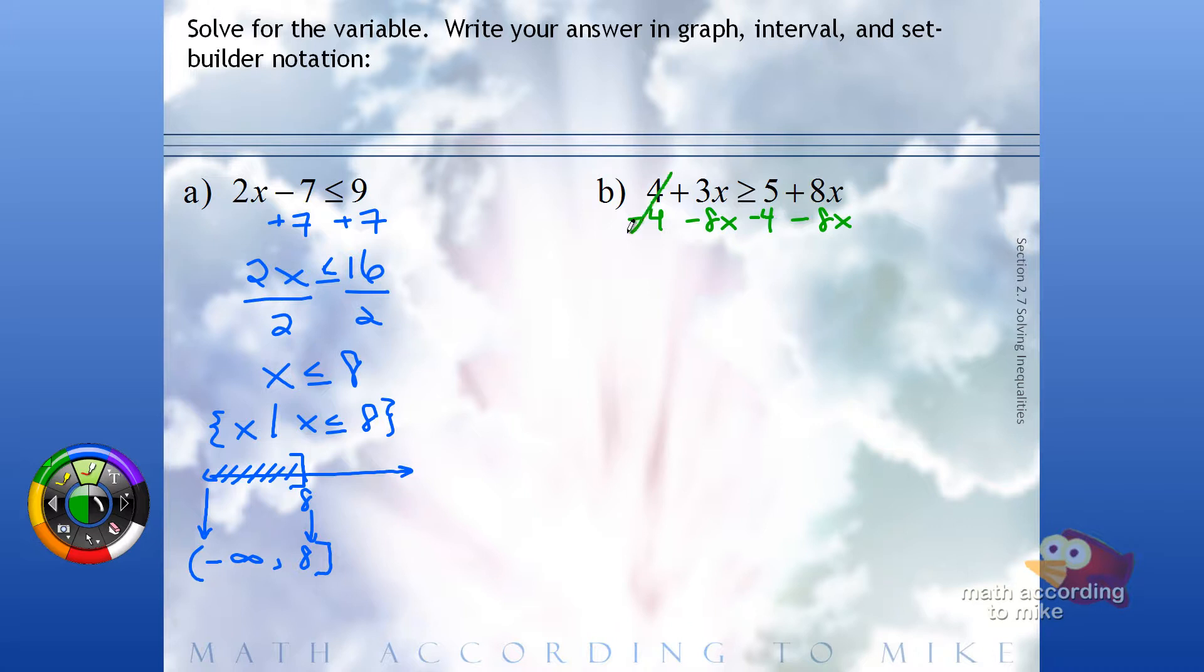So on the left, the 4s cancel. 3x minus 8x is negative 5x. Here, the 8x's cancel. 5 minus 4 in most countries is 1.